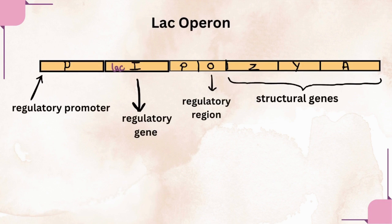The transcriptional unit of lac operon consists of the regulatory promoter, regulatory gene, lac promoter, lac operator, and three structural genes: lac Z, lac Y, and lac A.